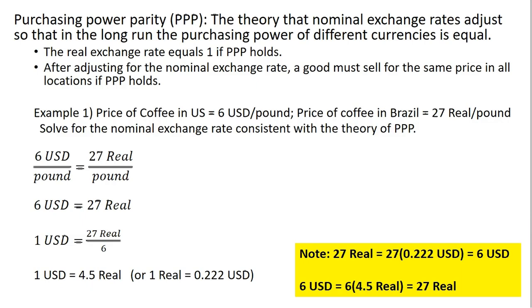In this video we're going to look at purchasing power parity and how to calculate the nominal exchange rate implied by the theory of purchasing power parity. Purchasing power parity is a theory that in the long run the nominal exchange rate adjusts so that the purchasing power of different currencies is equal. This means that the real exchange rate equals 1 if purchasing power parity holds, and it also means that after adjusting for the nominal exchange rate, a good must sell for the same price in all locations if purchasing power parity holds.